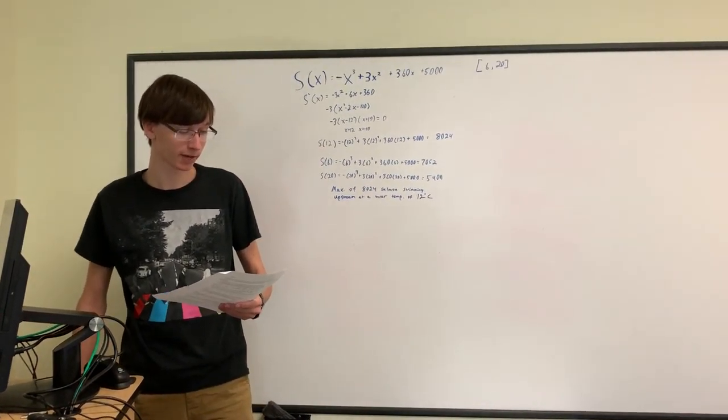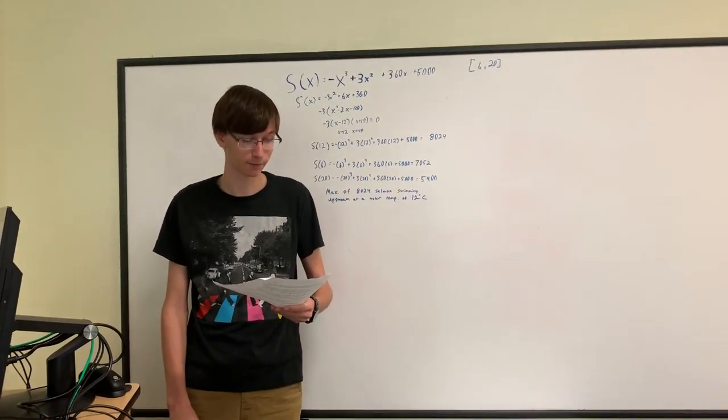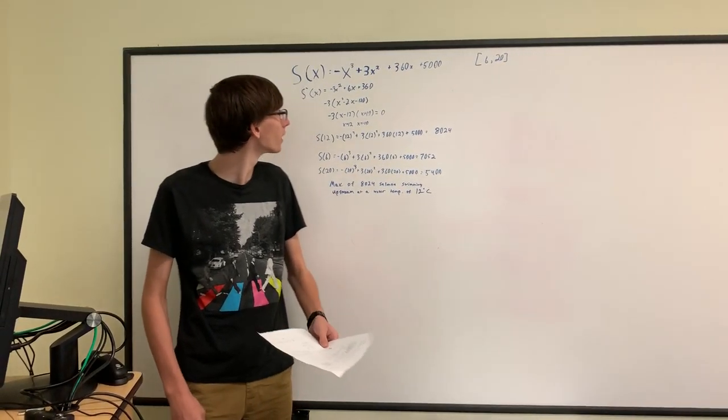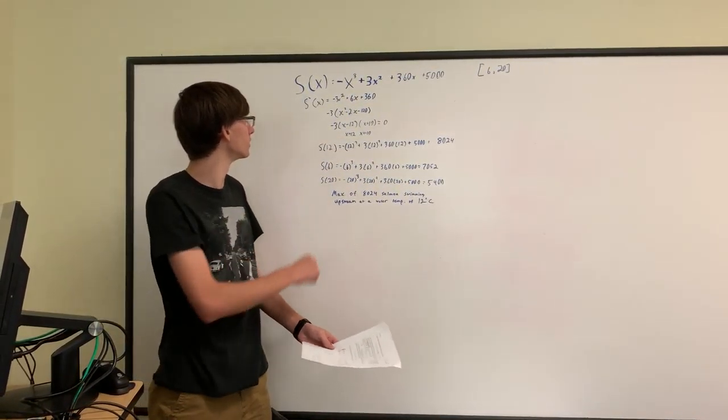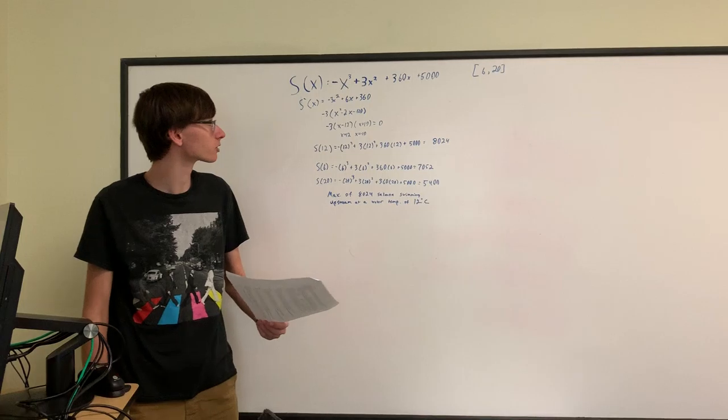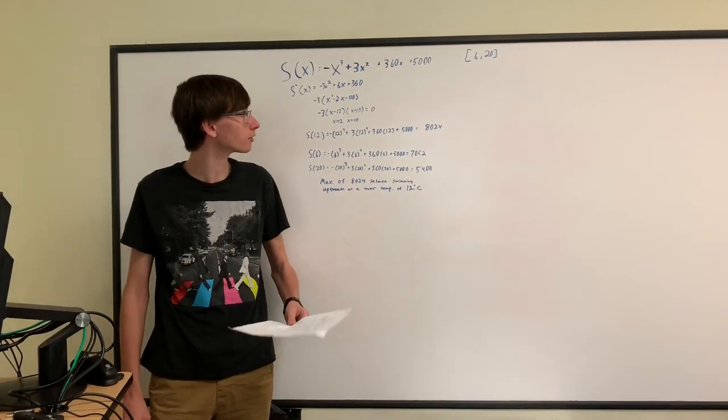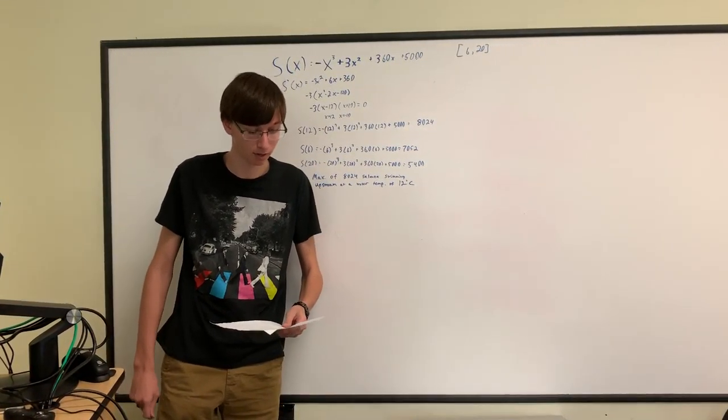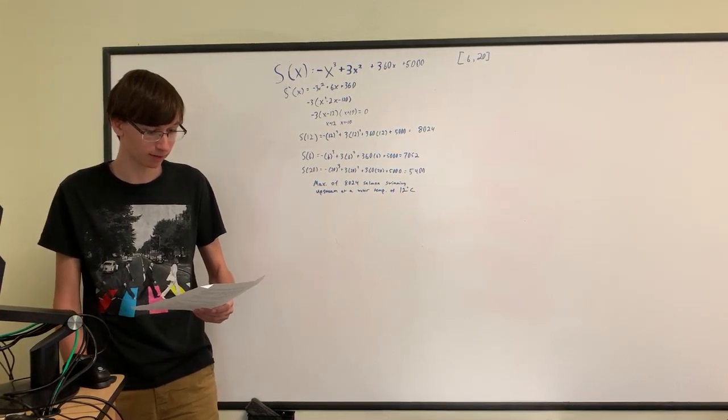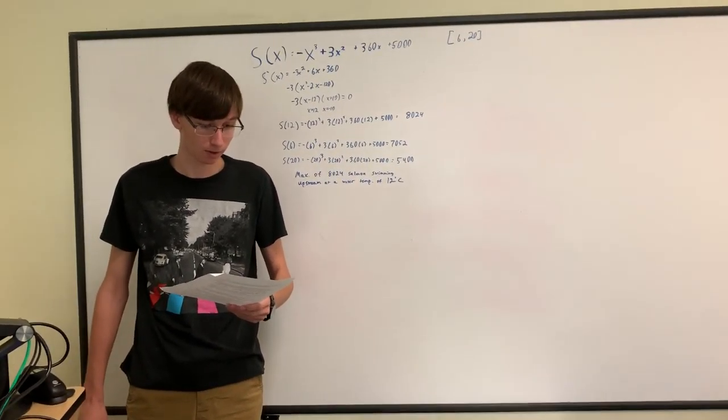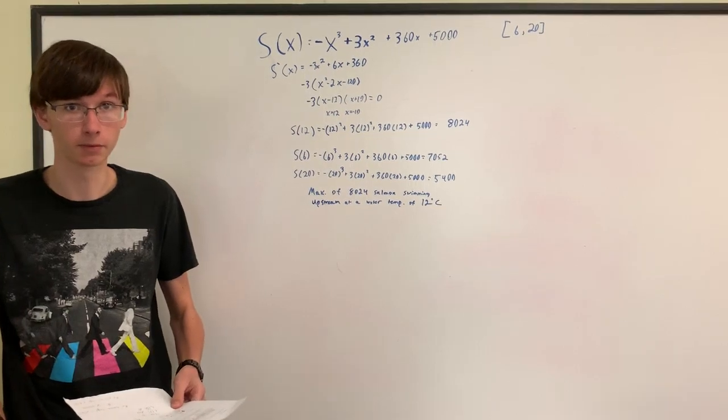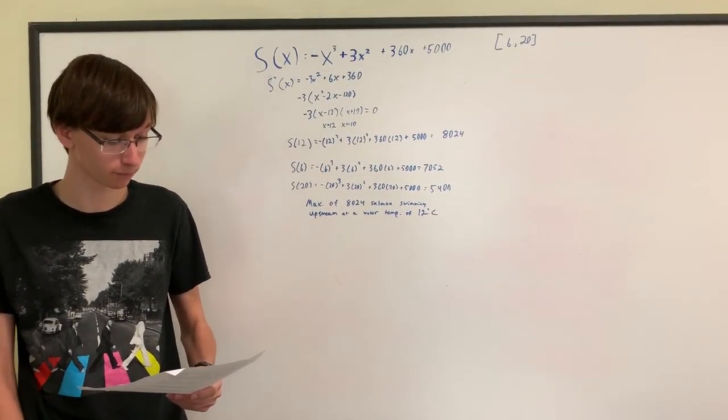Alright, for the first problem we are tasked with finding the number of salmon swimming upstream which is spawned by this equation: negative x cubed plus 3x squared plus 360x plus 5000. We are tasked to find the maximum number and what water temperature produces the maximum number of salmon swimming upstream.